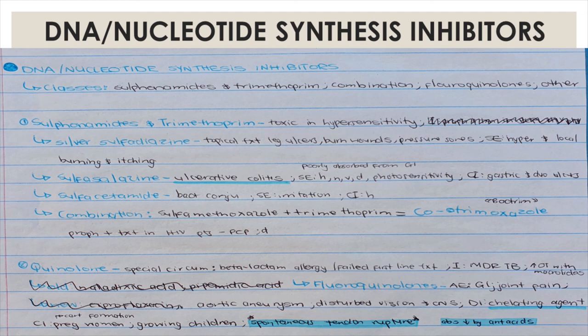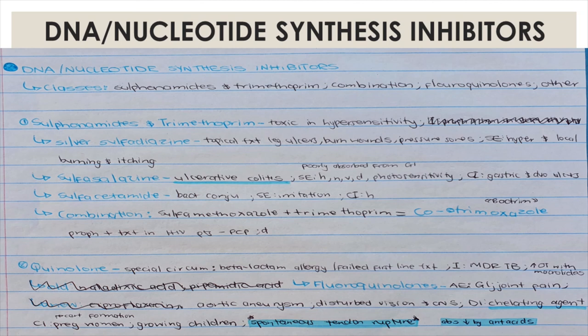When sulfamethoxazole and trimethoprim are combined, you get co-trimoxazole, also known as Bactrim. This is a prophylactic treatment given to HIV patients to prevent opportunistic infections — since they are immunosuppressed and immunocompromised they are highly likely to get other infections, and it is given in addition to their treatment until their viral load goes down.